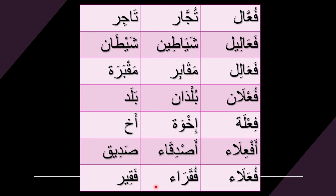Both fuqara and miskeen mean poor, but fuqara is for poor people in plural and miskeen is for one. One more thing to know is that it's quite common for Arabic nouns to have more than one broken plural, so don't get surprised when you see many plural forms of one noun. Keep practicing these patterns to memorize how it changes, so in the future you can guess the plural form of a noun you haven't learned before. If you know other examples for the same patterns, please leave them in a comment. Thanks for watching and see you in the next video. Ma'assalama.